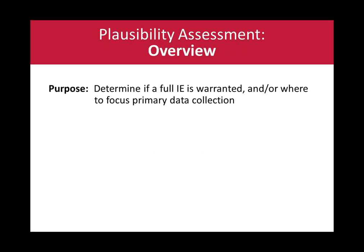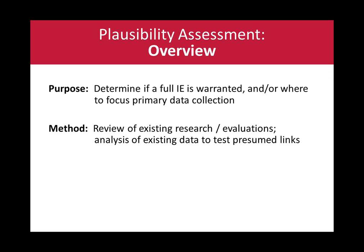The plausibility assessment, before doing primary data collection, takes stock of existing information to assess whether the program's theories are grounded in strong logic and supported by other studies. Good sources include systematic reviews being compiled by groups like 3ie. Another method we've been using at Mercy Corps is our own analysis of existing secondary data to test those links within the broader target population — using national or cross-national surveys with measures relevant to program outcomes.